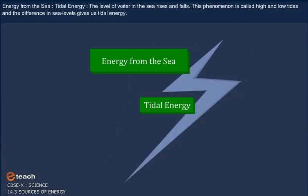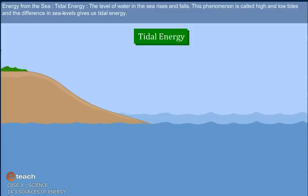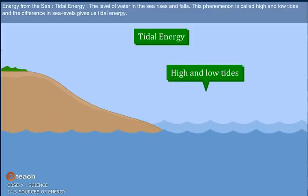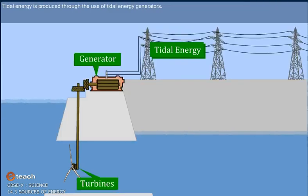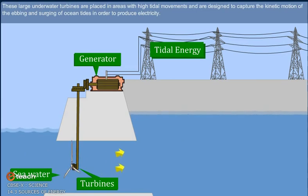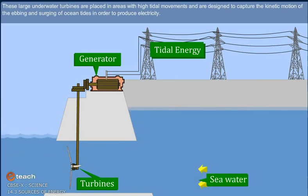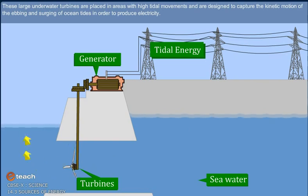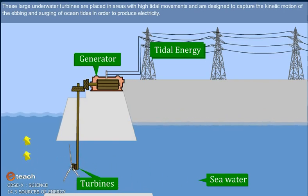Energy from the sea. Tidal energy: The level of water in the sea rises and falls. This phenomenon is called high and low tides and the difference in sea levels gives us tidal energy. Tidal energy is produced through the use of tidal energy generators. These large underwater turbines are placed in areas with high tidal movements and are designed to capture the kinetic motion of the ebbing and surging of ocean tides in order to produce electricity.